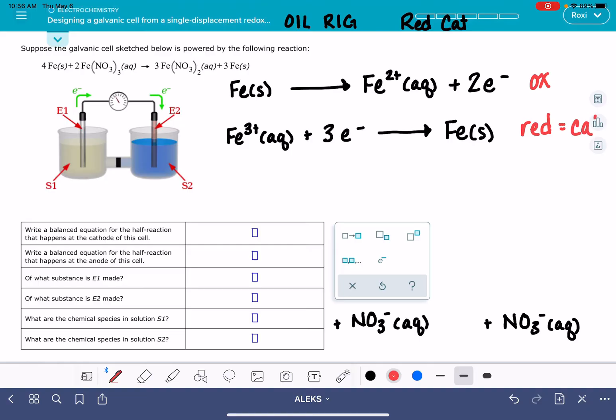And red cat means that this reaction, the reduction reaction, is taking place at the cathode. Oxidation is taking place at the anode. We're ready to enter these into the first part of the Alex problem. What reaction is happening at the cathode? It's this one right here. And this is exactly how you want to be entering it. Alex doesn't want to see the nitrate, the NO3-, in this part.